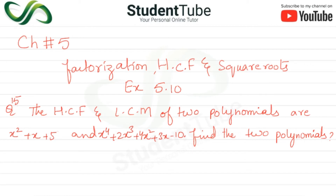Assalamualaikum, welcome to Student Tube. We will talk about Chapter 5, Factorization — 5.10, Question number 15. The HCF and LCM of two polynomials are x squared plus x plus 5 and x⁴ plus 2x³ plus 4x² plus 3x minus 10. Find the two polynomials — same as the previous question.